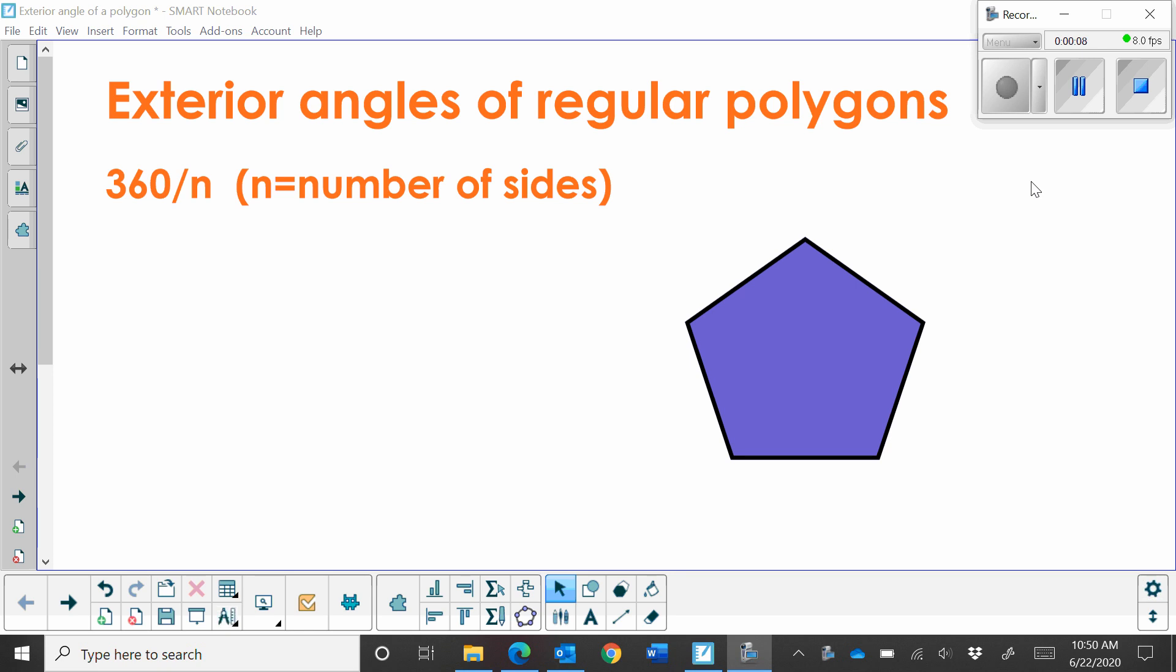The first topic we're going to look at is the exterior angle of regular polygons. There is a formula for that, and it's simply 360 degrees divided by n, where n is the number of sides.